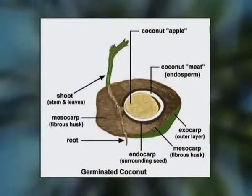Lastly, the seed. The endocarp encloses a single hollow seed. When the seed germinates, the radicle pushes out through one of the eyes of the shell.